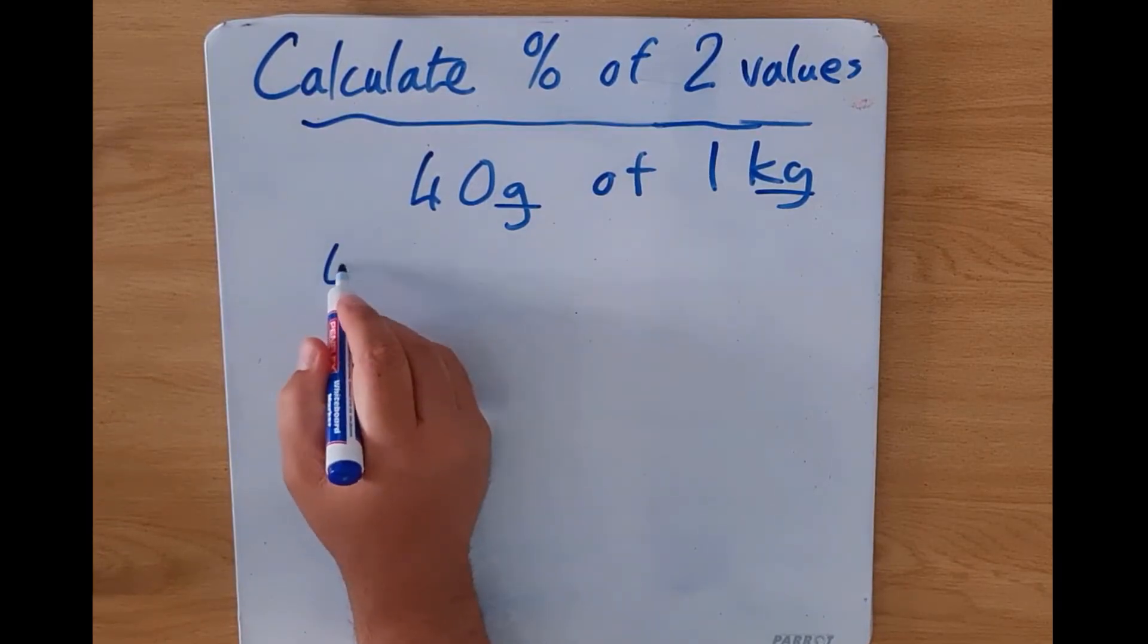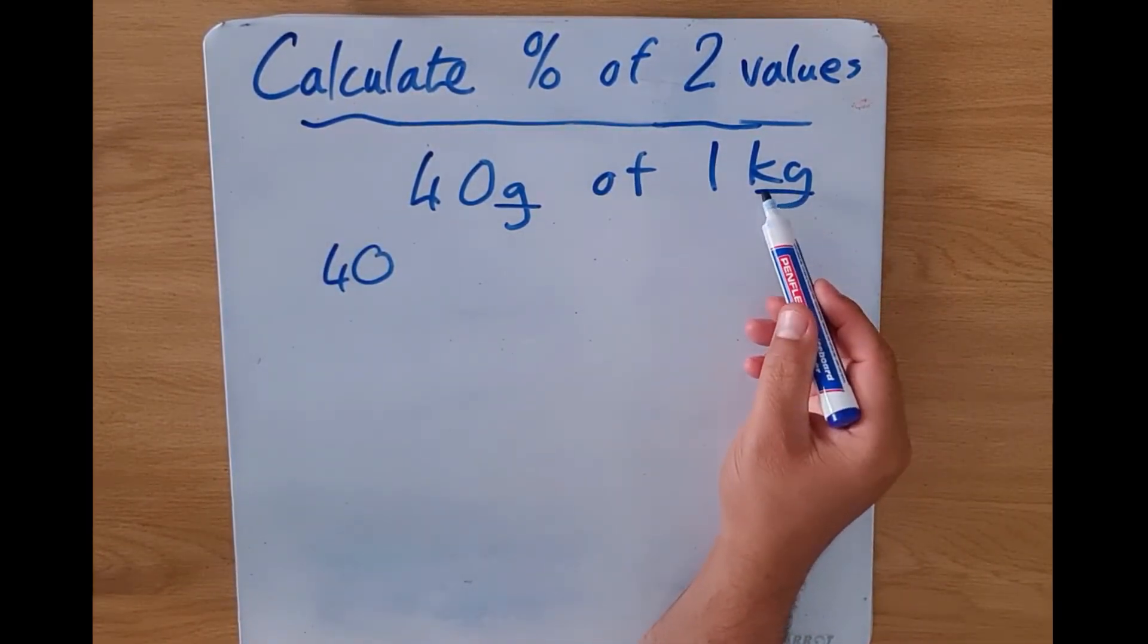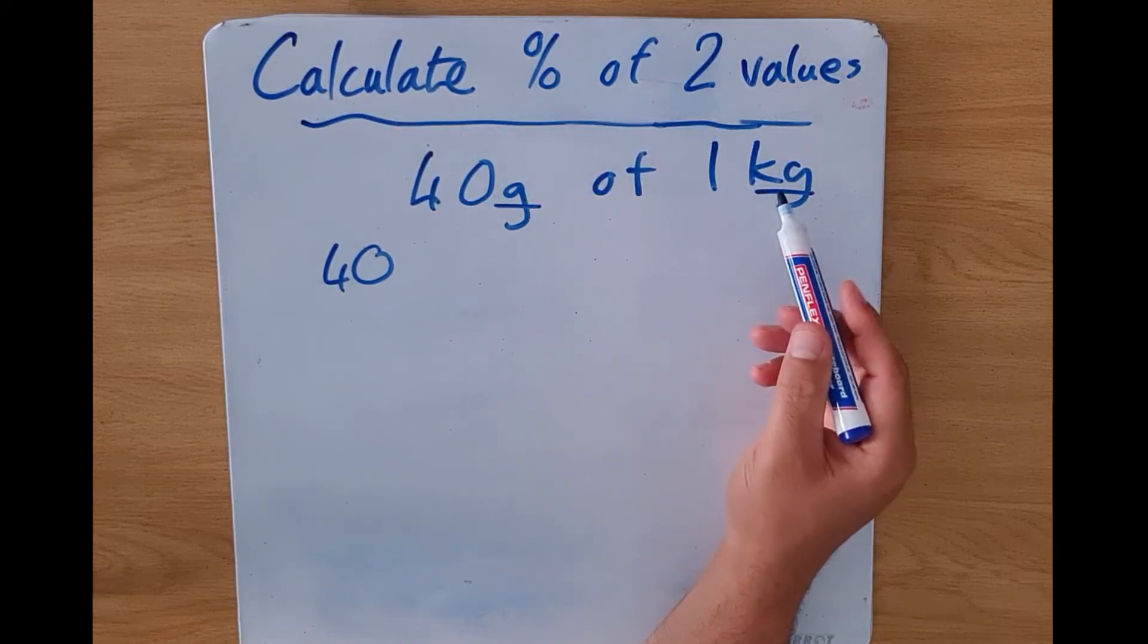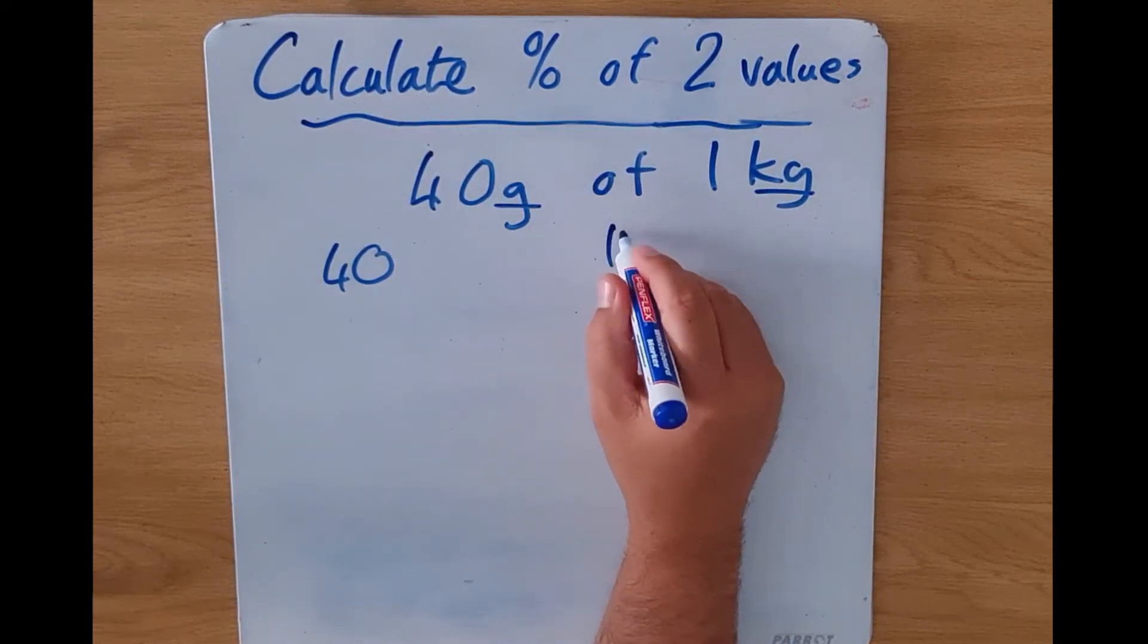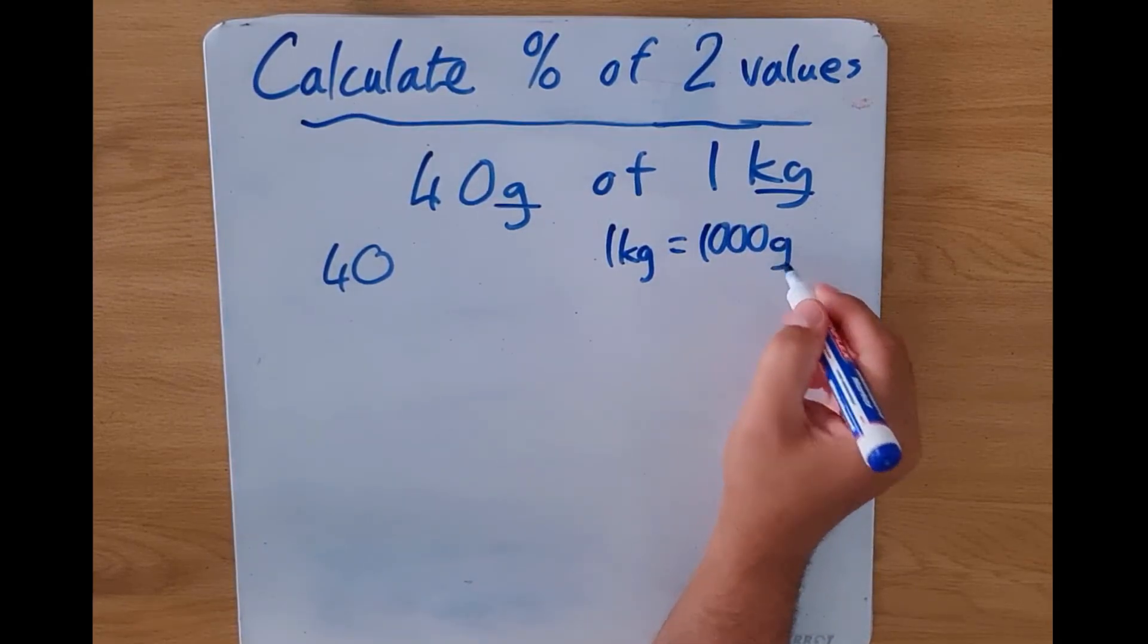We're going to take 40 grams over here, we're going to leave it as is, but we're going to convert our one kilogram into grams. Now how many grams are there in a kilogram? Well, one kilogram is equal to 1000 grams.